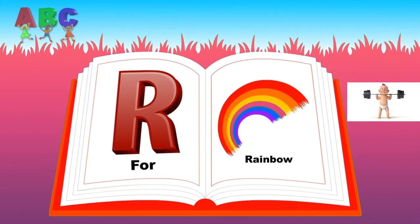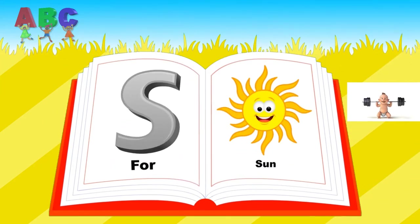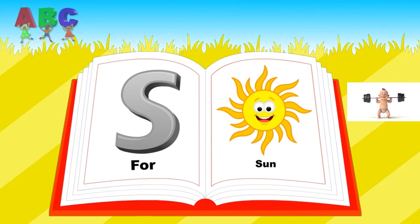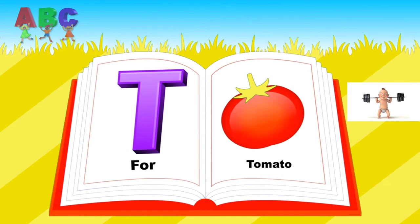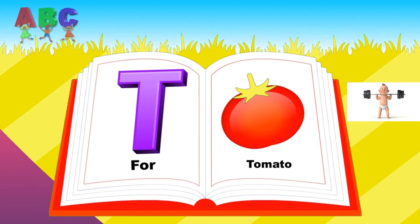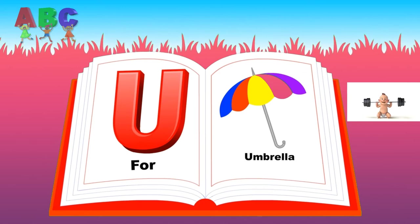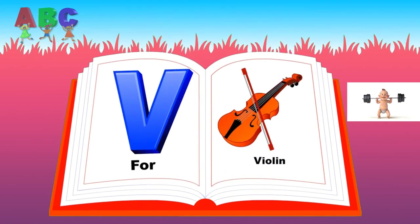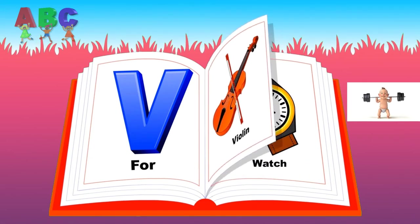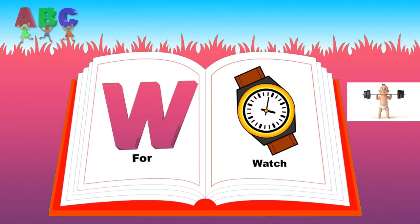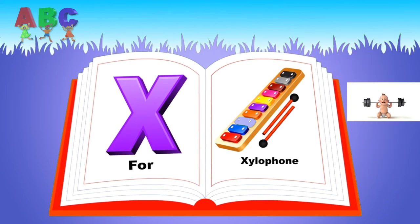R for Rainbow. S for Sun. T for Tomato. U for Umbrella. V for Violet. W for Watch. X for Xylophone.